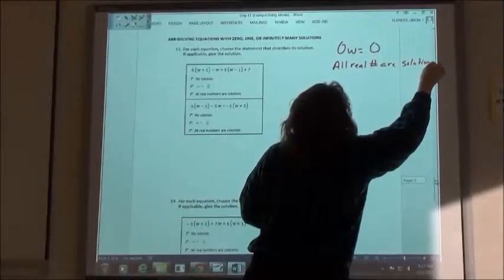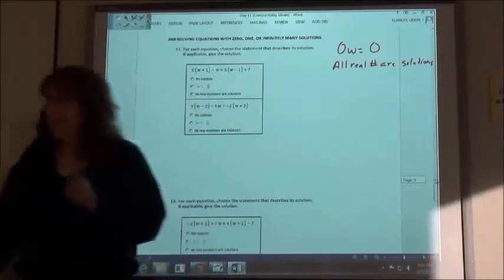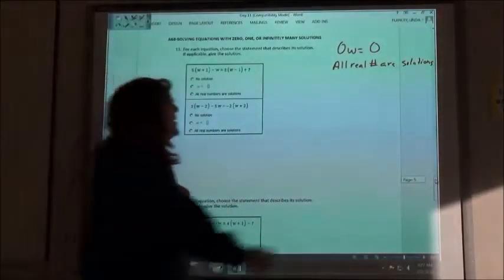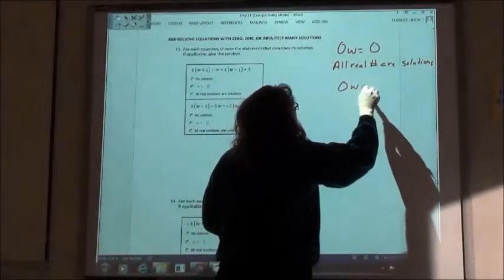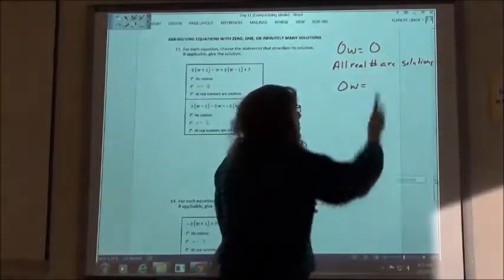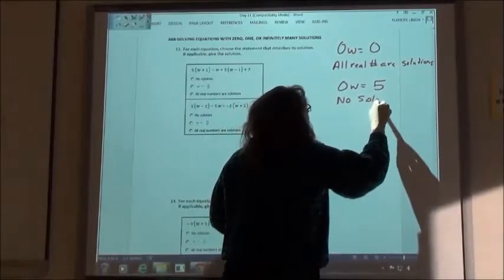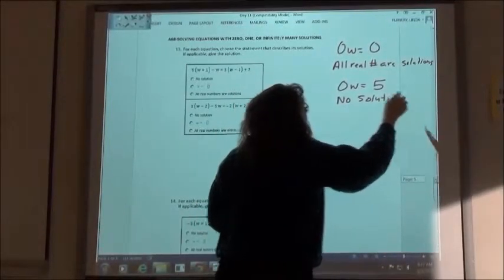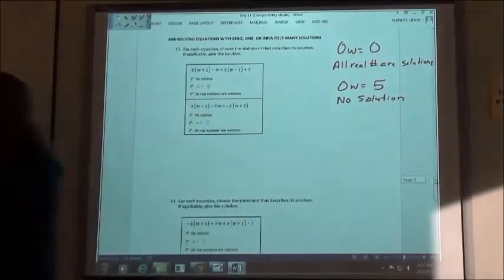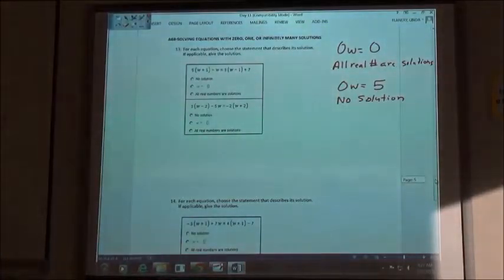Because I can put any number in and have that be a true statement. If I get 0w equals any number in the world other than 0, say it's a 5, then I can't do that. I can't take 0 times anything and get 5, right? 0 times 5 is 0.